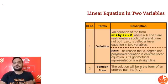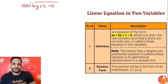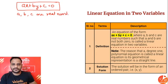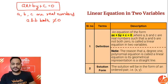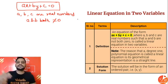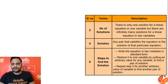Now for linear equations in two variables: the general form is ax + by + c = 0, where a, b, and c are real numbers, and a and b should not both be equal to zero. It is called 'linear' because the power of each variable is one, and 'two variables' because both x and y are present. Solutions are written as ordered pairs (x, y), and when plotted, these points form a straight line.